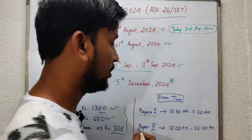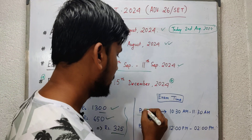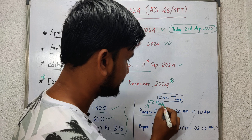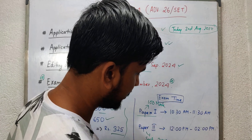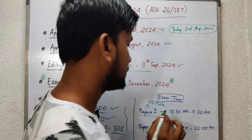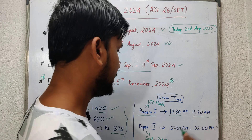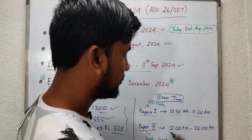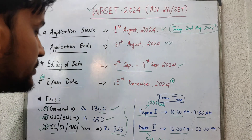Now the exam time: West Bengal SET is conducted in two phases — Paper 1 and Paper 2. Paper 1 contains 100 marks and Paper 2 contains the subject paper, that is 200 marks. Paper 1 is for one hour, timing is 10:30 to 11:30 AM, and Paper 2 is two hours, from 12 PM to 2 PM.